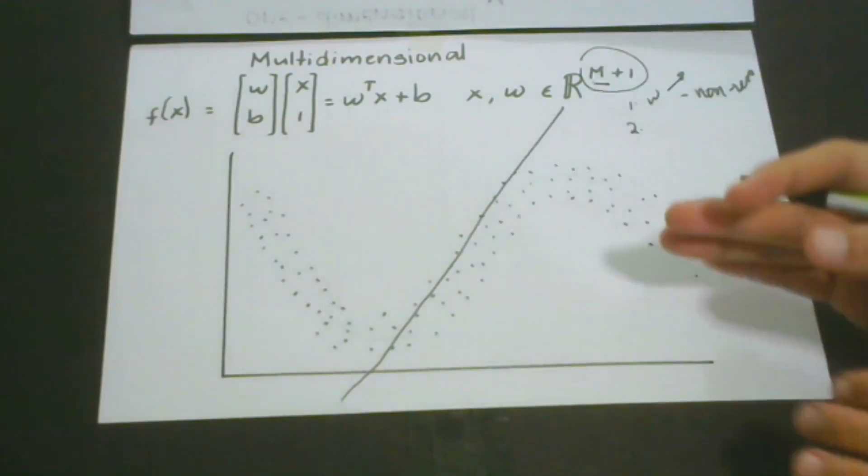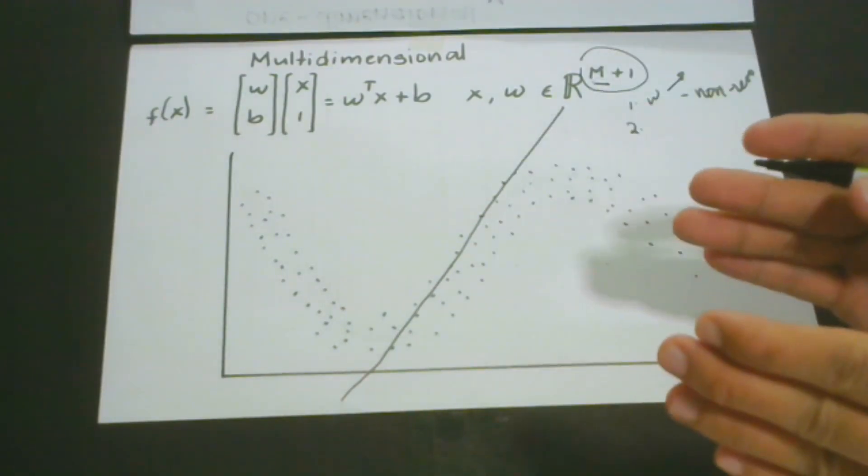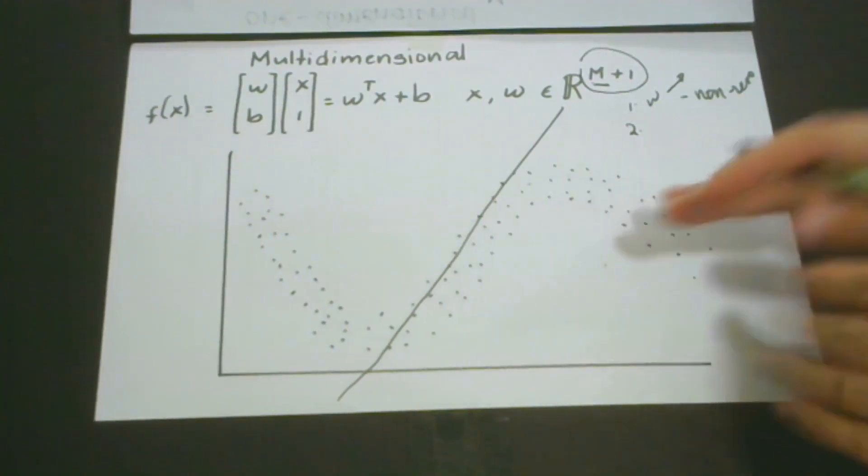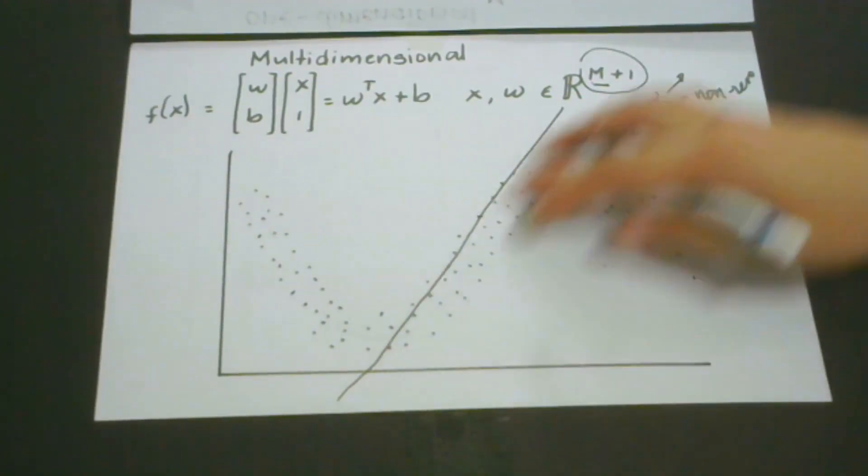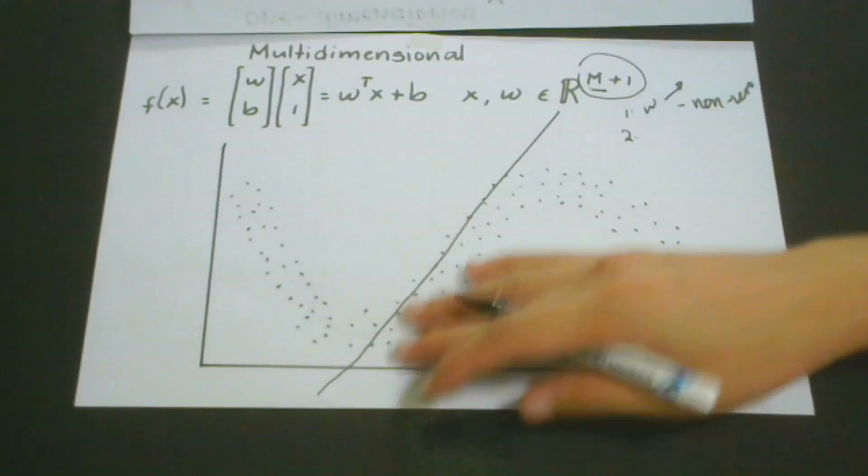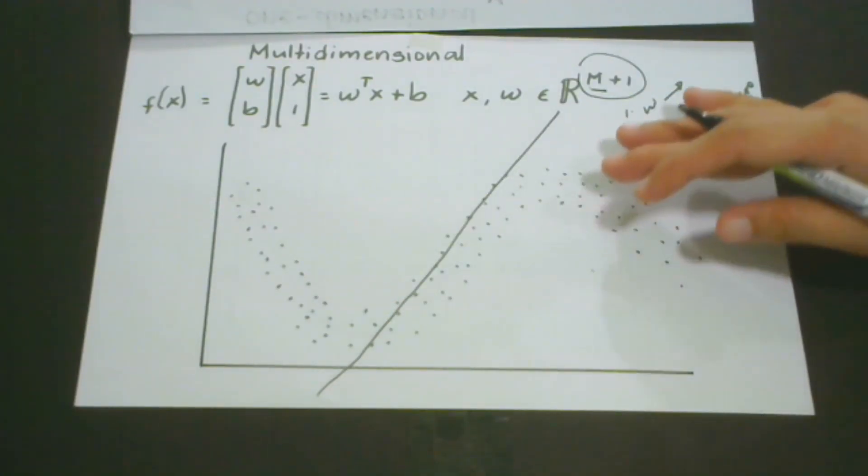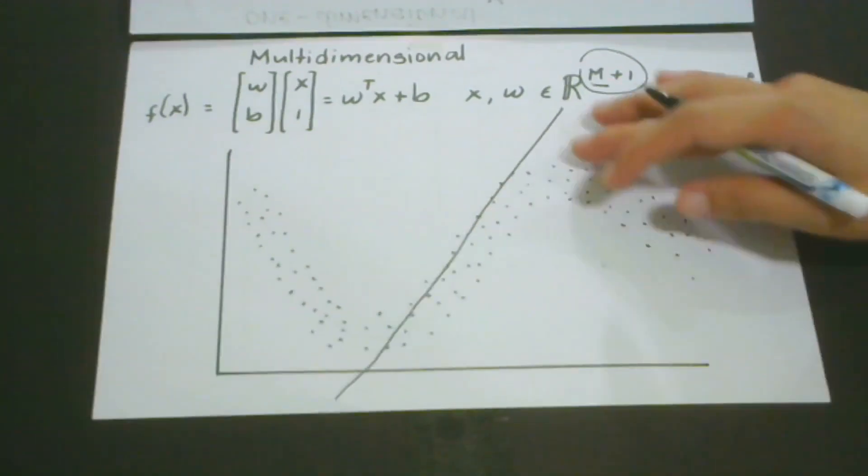I believe we don't want that to happen. We always would like something that really defines the trend of our data. If we use this kind of model for data not yet seen by our model, it cannot give us proper prediction.